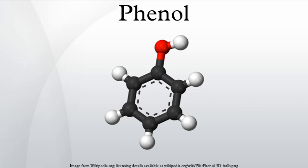Phenol exhibits keto-enol tautomerism with its unstable keto-tautomer cyclohexadienone, but only a tiny fraction of phenol exists as the keto form. The equilibrium constant for enolization is approximately 10⁻¹³, meaning that only one in every 10 trillion molecules is in the keto form at any moment. The small amount of stabilization gained by exchanging a C=C bond for a C=O bond is more than offset by the large destabilization resulting from the loss of aromaticity. Phenol therefore exists entirely in the enol form.